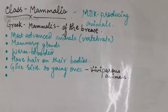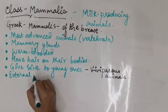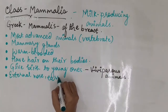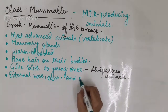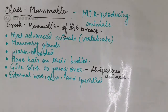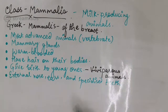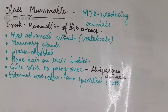Next characteristic: all mammals, or most mammals, have an external nose, ears, and specialized teeth. Specialized teeth means they have a pair of incisors, canines, molars, and premolars for grinding, chewing, and biting food.